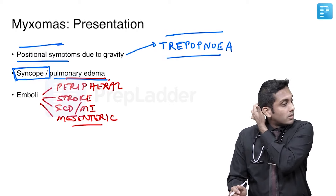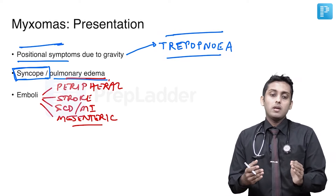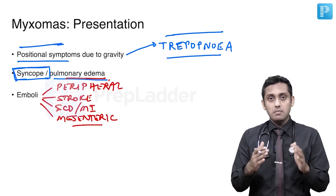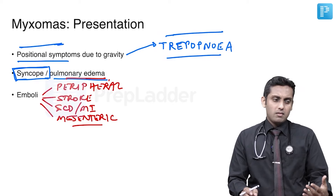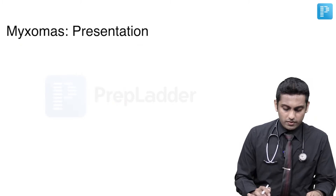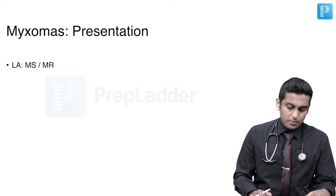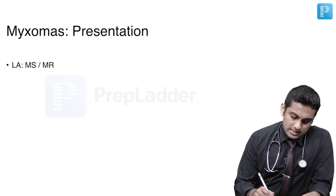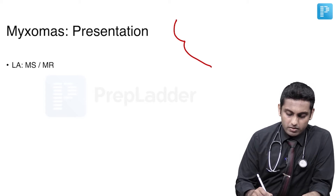Any one of these embolic presentations, which is unexplained, should encourage us to look for a possibility of a cardiac myxoma. Because of the presence in the left atrium 80% of the time, it presents something like mitral stenosis. It can also present like mitral regurgitation.